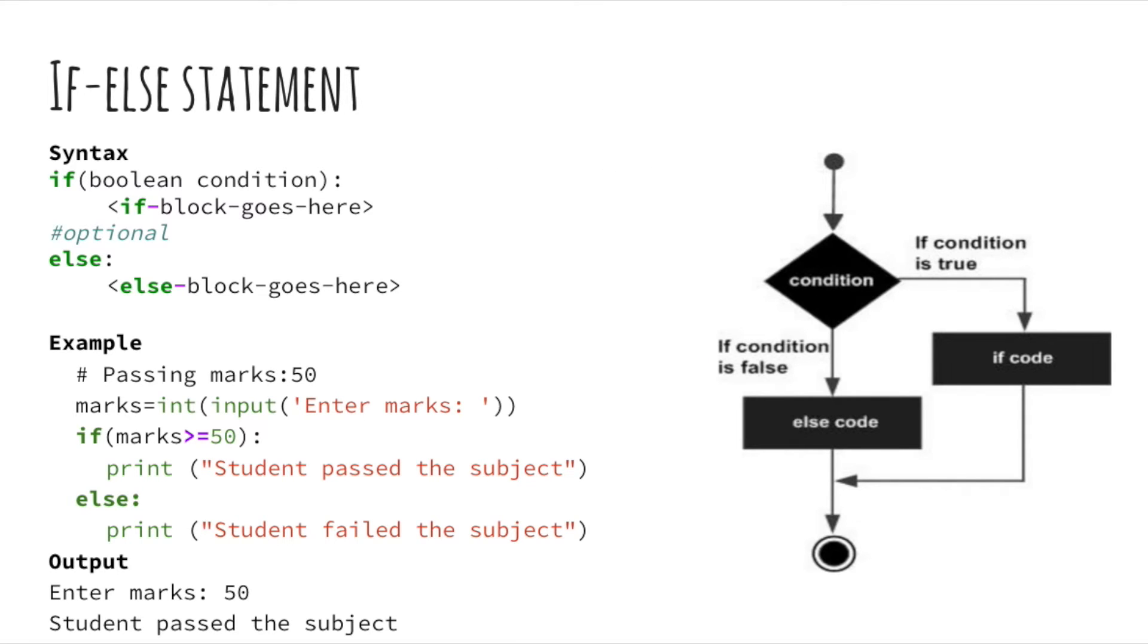Let's look at the if-else statement. As you can see when we arrive at the condition block the condition is first checked to see whether it's true or false. If the condition is true then the if code is executed. Otherwise if the condition is false then the else code is executed. An if-else statement can either be true or false based on the boolean condition.